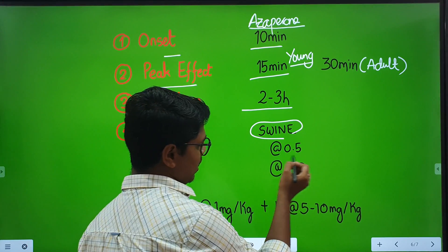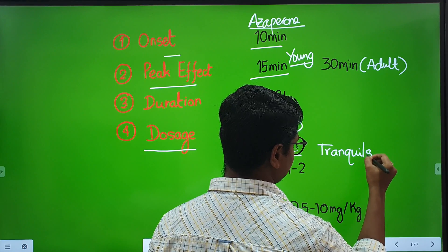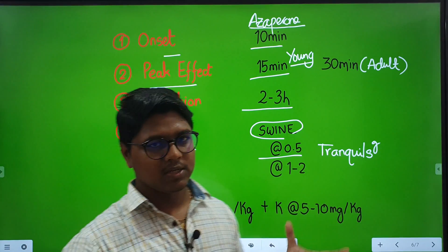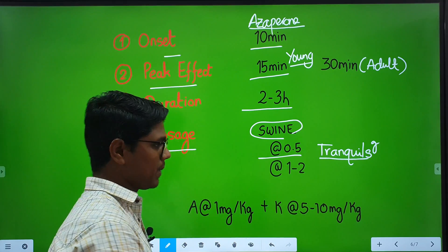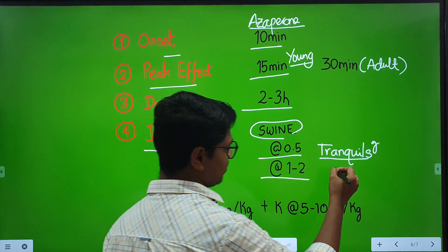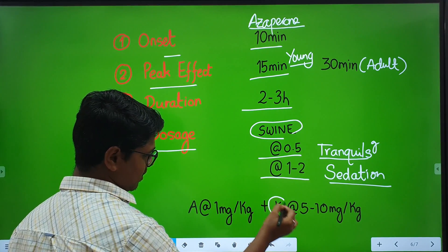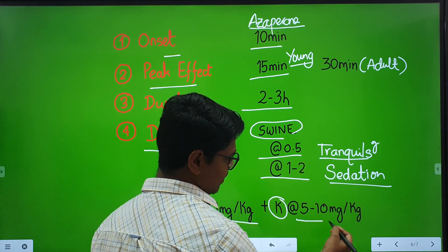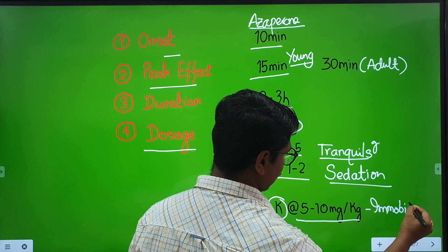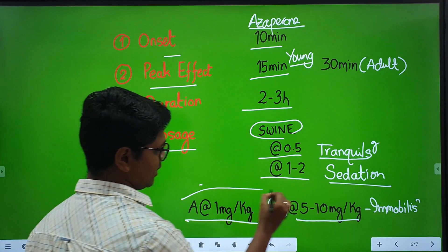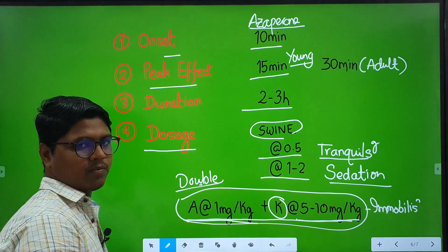At the dose of 0.5 mg per kg, it has a tranquilizing effect. When you are bringing a new stock of swines to prevent infighting, they are given the Stresnil injection. At the dose rate of 1 to 2 mg per kg body weight, it has a sedative effect. It can be combined with ketamine: azaperone at 1 mg per kg body weight and ketamine at 5 to 10 mg per kg body weight will produce complete immobilization. If you want anesthesia, simply double this dose rate. This dose rate is also enough for some minor surgical interventions.